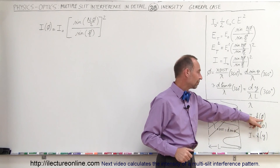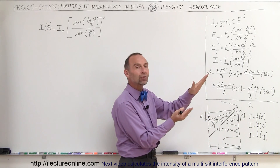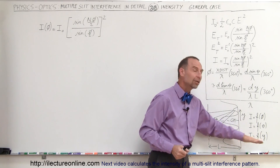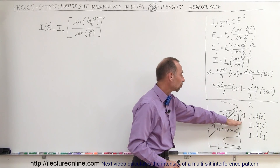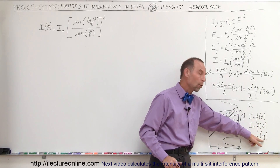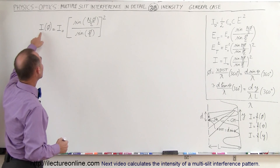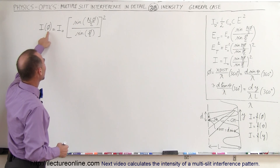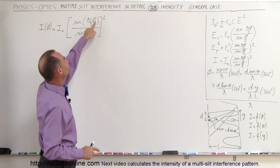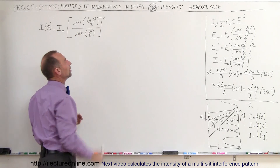We're going to find intensity as a function of the phase angle, as a function of the look angle, or as a function of the distance on the screen away from the central maximum, called Y. The intensity as a function of phase angle is equal to the intensity of a single slit times the sine of the number of slits N times the phase difference φ divided by 2, divided by the sine of the phase difference divided by 2, and the whole quantity squared.